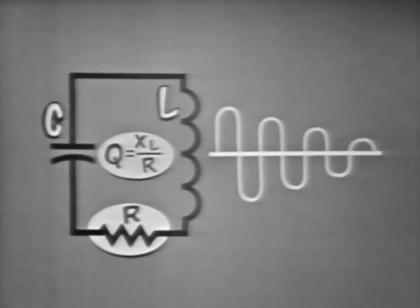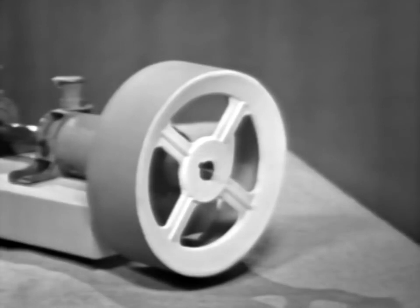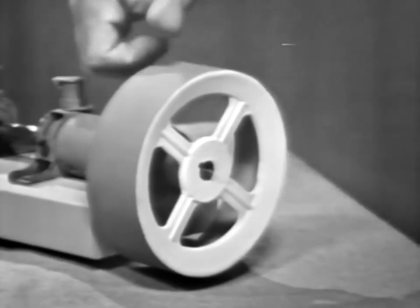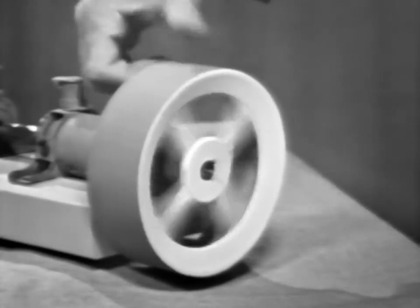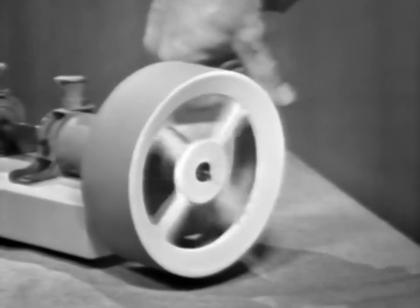But even the highest quality components offer some resistance. So, to generate a waveform of constant amplitude, energy must be added to the circuit at the same rate that it's being lost, in much the same way that we fed energy to the mechanical oscillator. The ringing action of the LC circuit is often referred to as the flywheel effect because, like a flywheel, once it's started, a small amount of energy added at the right time and in the right direction will keep it going.